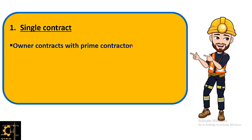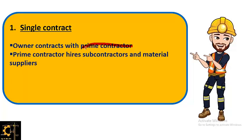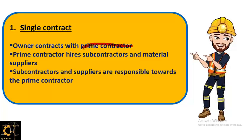The first one is single contract. In construction there are three major persons involved: the owner (also called the client), the contractor, and the consultant. In a single contract, the owner contracts with the prime contractor, and the prime contractor hires subcontractors for small or petty works and is also in contact with material suppliers.